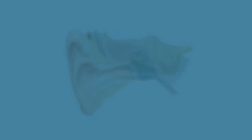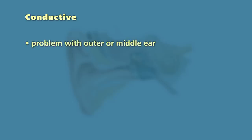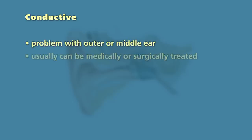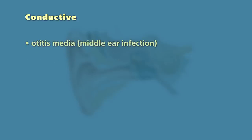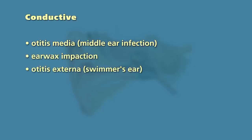There are three categories of hearing loss: conductive, sensorineural, and mixed. A conductive hearing loss is a loss that occurs because of a problem in the outer or middle ear. In many cases, a conductive hearing loss can be medically or surgically treated. Causes of conductive hearing loss include otitis media, commonly called middle ear infection; earwax impaction; otitis externa, or swimmer's ear; and a foreign body in the ear canal.